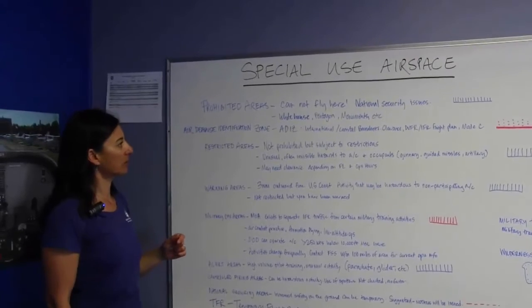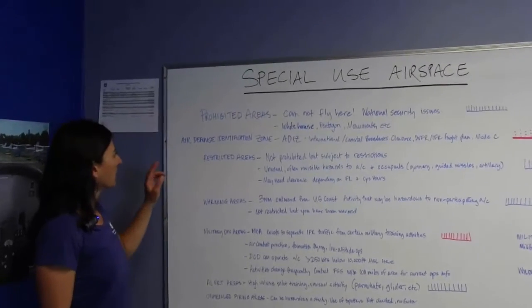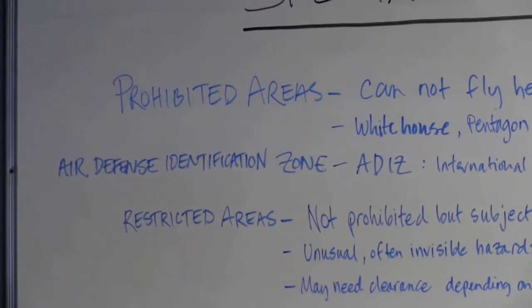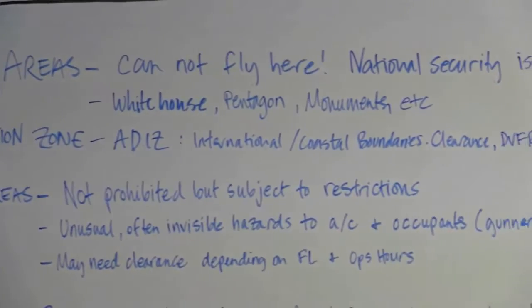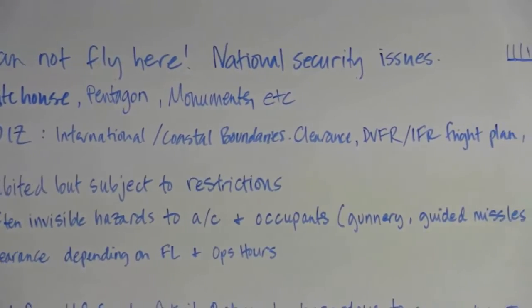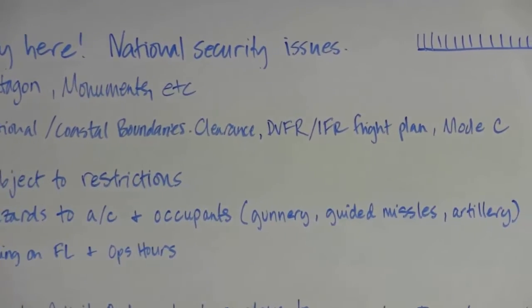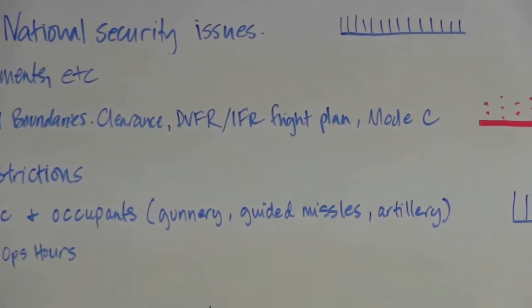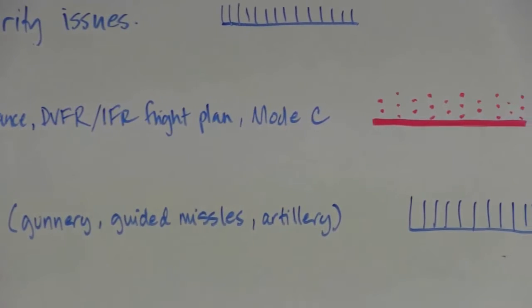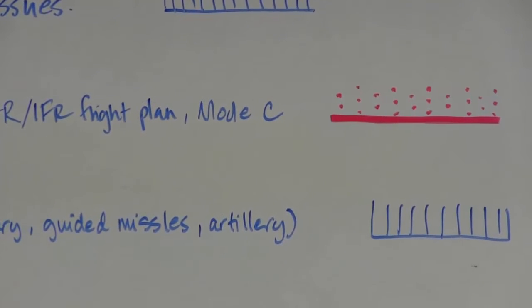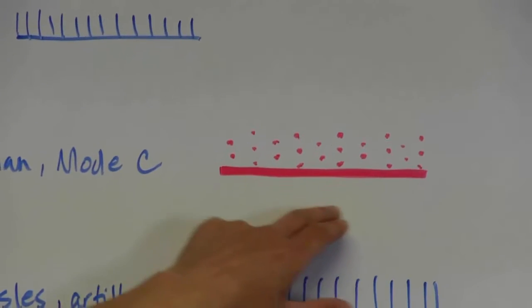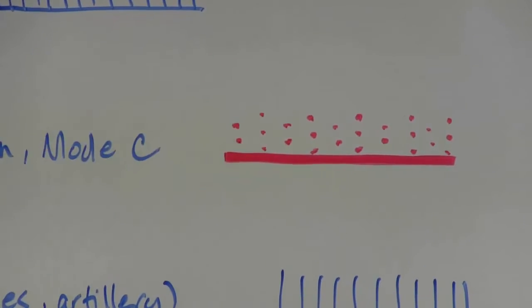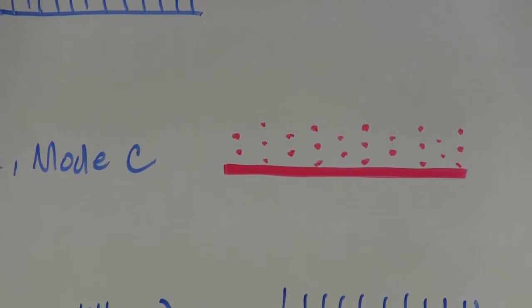Next would be the Air Defense Identification Zone, also known as the ADIZ. It's surrounding international and coastal boundaries. You do need clearance — you need to file a DVFR or IFR flight plan and you need a Mode C transponder. It is depicted on a sectional by a magenta line with some polka dots. We'll go to the sectional and show you what that looks like.